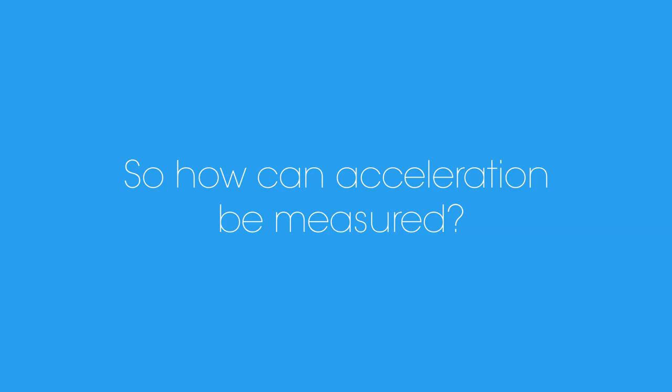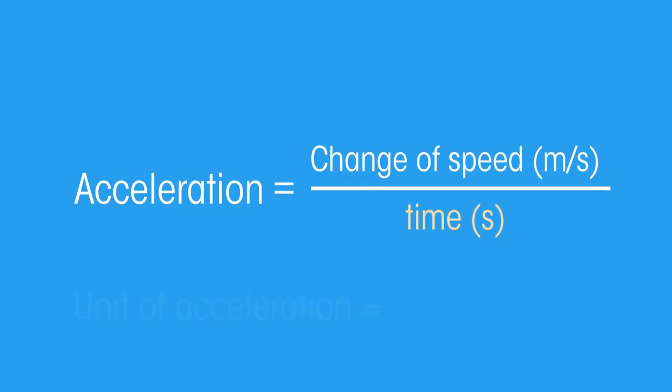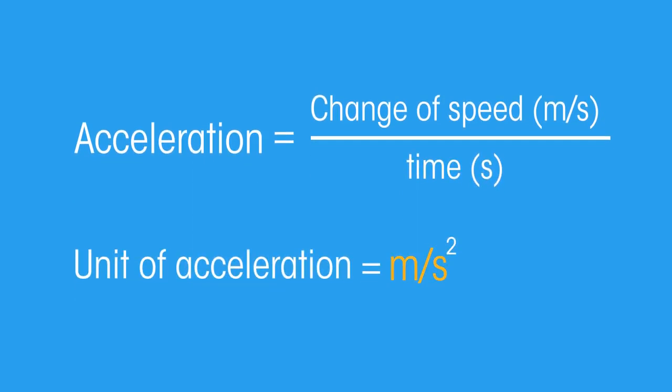So how can acceleration be measured? Since acceleration is the rate at which an object changes its speed, you can say that acceleration is the change of speed over time. The unit of acceleration is meters per second squared.